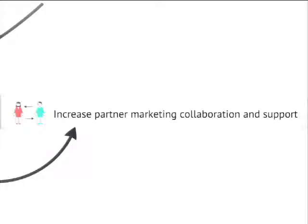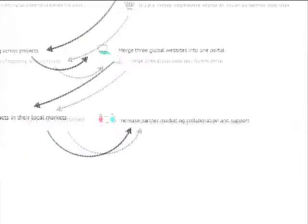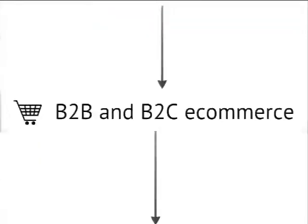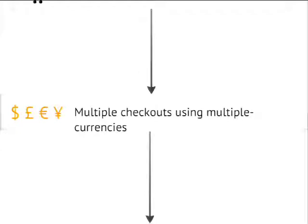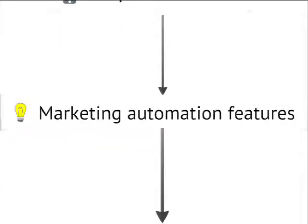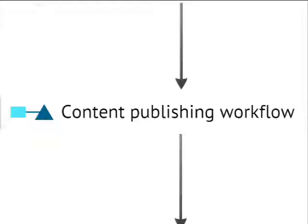By having this consistency and central hub, my team in Manchester could increase marketing collaboration and support for those partners, so hopefully everyone gets more out of it. In terms of requirements: multi-site, multi-region, multi-lingual; B2B and B2C e-commerce; multiple checkouts using multiple currencies; a responsive theme because everyone's using mobile now; marketing automation features; and a content publishing workflow.